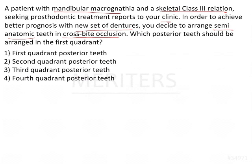This seems like a new concept to many students because it is not what we conventionally do. Crossbite occlusion is indicated in class 3 skeletal conditions. Let's have a look at the different ways of arranging teeth.